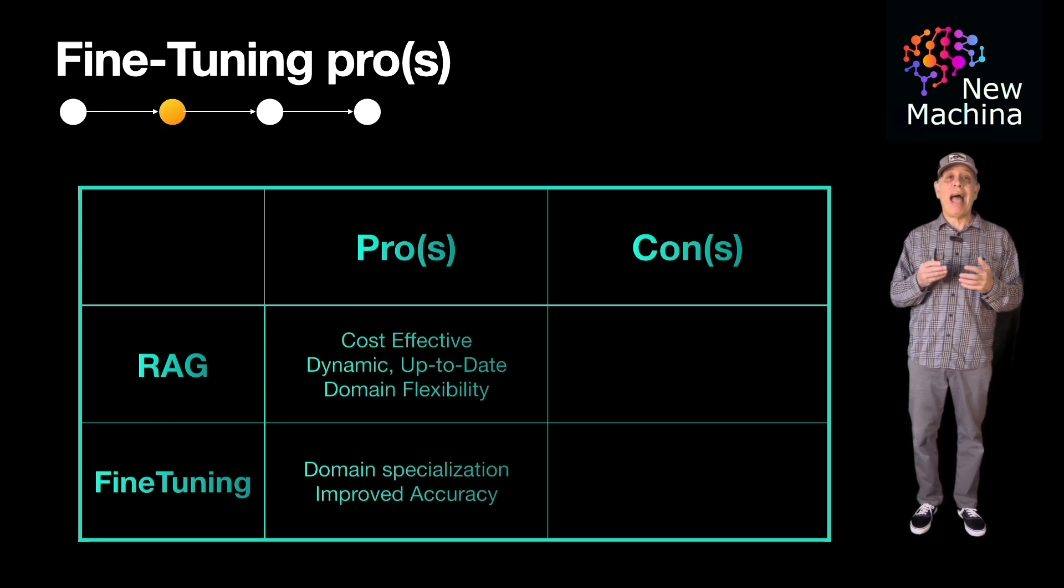The next is improved accuracy. After fine-tuning, an LLM becomes inherently better at tasks it's been fine-tuned on without external dependencies.